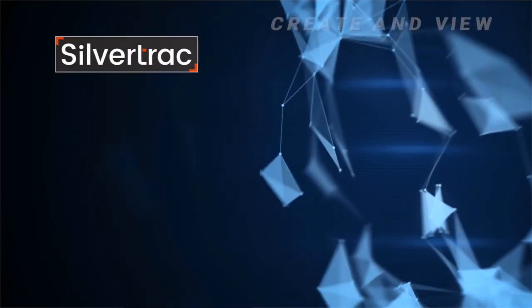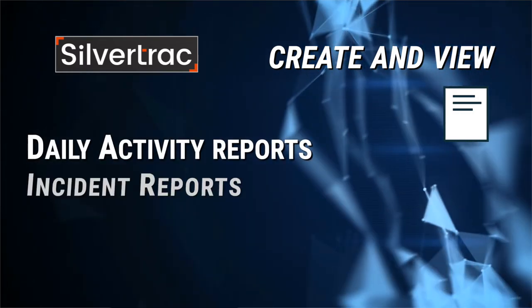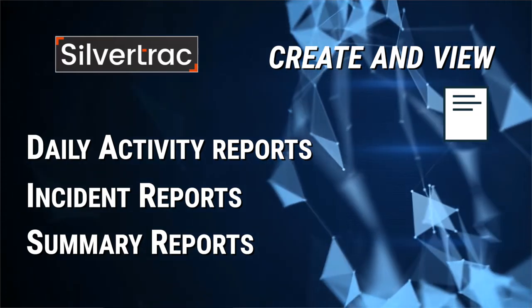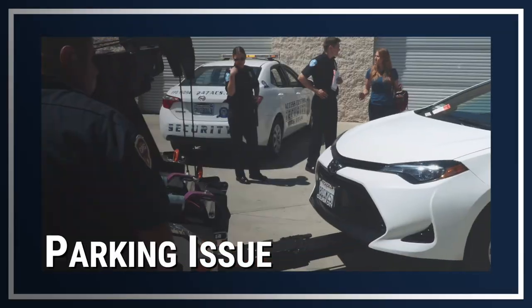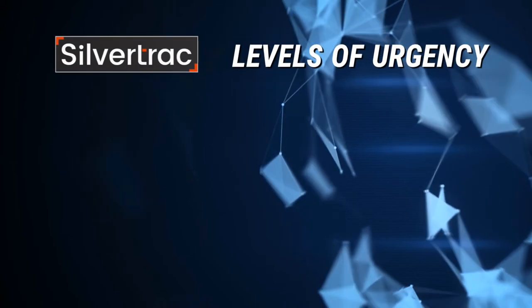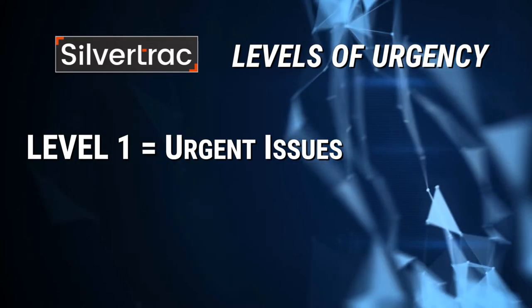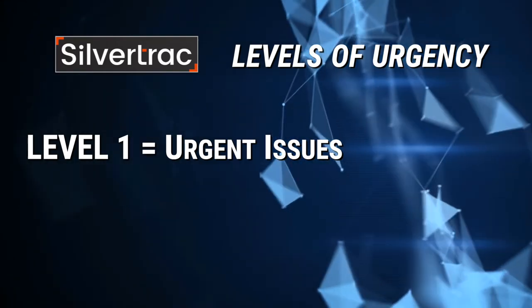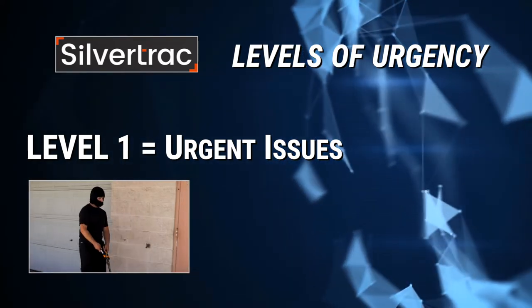SilverTrack helps you to create and view detailed reports, including daily activity reports, incident reports, and summary reports. To fill out the incident report, first select the type of issue you are dealing with — is it a security issue, a maintenance issue, or a parking issue? If you don't see the issue you want to report on in the list, find the closest match. SilverTrack gives you the option of selecting different levels of urgency. Select level one for urgent issues that need immediate attention — for example, a maintenance issue that could put people's lives in danger, property damage, or a robbery.